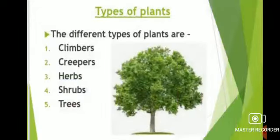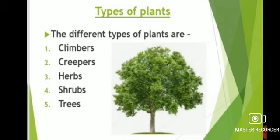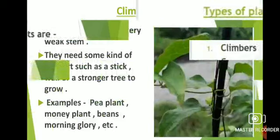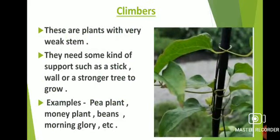The next topic is types of plants. We see different kinds of plants around us. Some plants are big while some are small. Some are found on land and some are found in water. On the basis of shape and size, plants are of the following types: climbers, creepers, herbs, shrubs, and trees. Now we will discuss all the types of plant in detail.